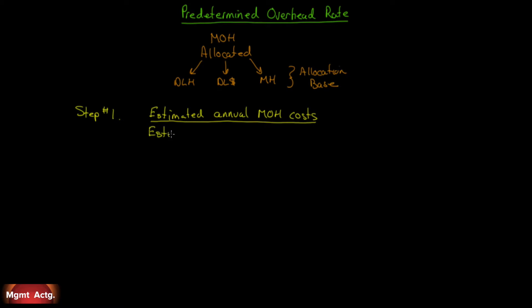Step number two: estimate our total allocation base, whatever it happens to be. If it's direct labor hours, how many hours are we going to pay for this year? How many hours are we going to employ? Or how much money is it going to cost us for all our labor? Or how many machine hours are our machines going to run? We divide our estimated annual costs by that allocation base, and we'll come up with a predetermined overhead rate.